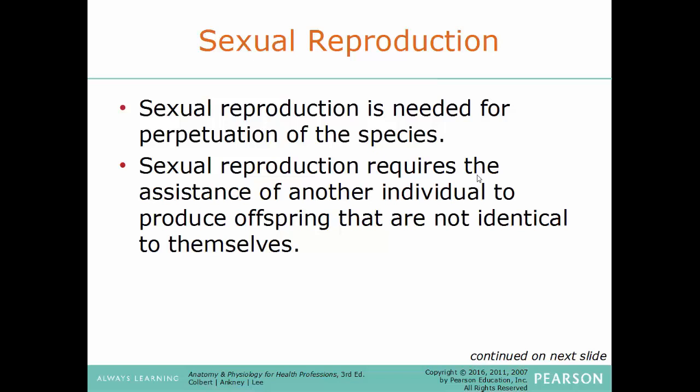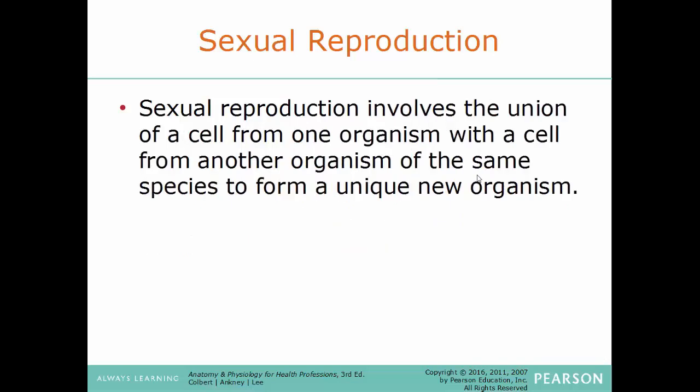Sexual reproduction is needed for the perpetuation of species — that's how any species continues surviving. Sexual reproduction requires the assistance of another individual to produce offspring that are not identical to each other. For any kind of animal to reproduce, you need two individuals involved. Sexual reproduction involves the union of a cell from one organism with a cell of another organism of the same species to produce a brand new organism. In humans, the union of an egg cell from the female plus a sperm cell from the male gives you the new offspring.